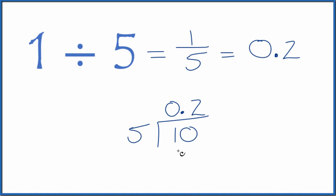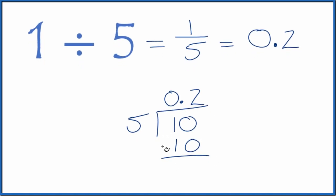Now two times five, that gives us 10 subtract and no remainder. So one divided by five, 0.2, which is what we found before.